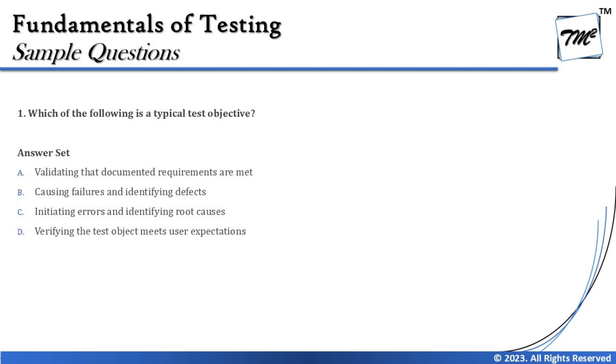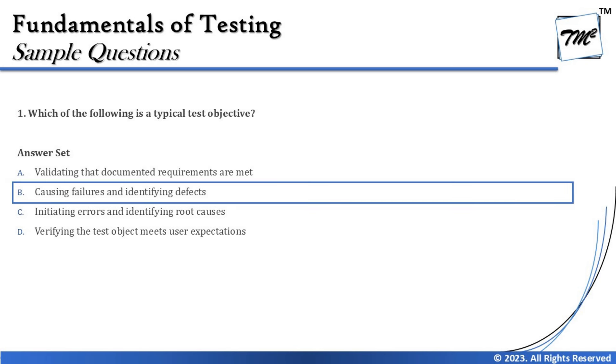Option A is tricky because validating that documented requirements are met is not listed as a typical test objective in the syllabus. Reviewing is more of verification, not validation. As per the syllabus, this is not listed as a typical objective. So the right answer for this question is B — causing failures and identifying defects is one of the typical test objectives. This question goes by the syllabus, not by general testing knowledge, so let's move on.